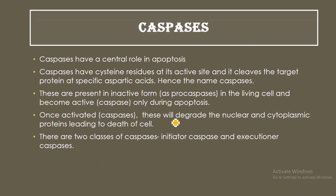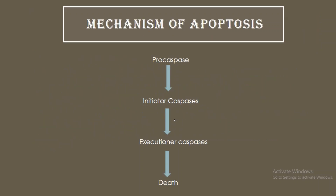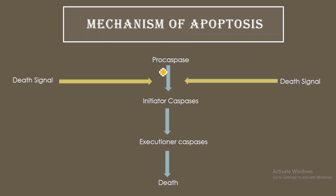This slide shows all the points I have already explained — you can pause the video and write it down. Now for the general layout of the mechanism of apoptosis: the death signal causes the conversion of a procaspase into the first class of caspases called the initiator caspase. This initiator caspase then causes the activation of the executioner caspases, which degrade proteins and lead to the death of the cell.